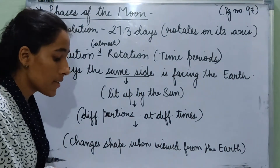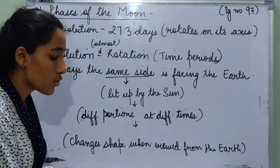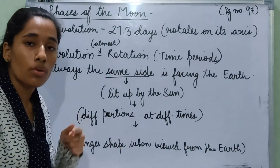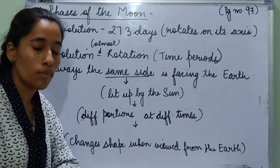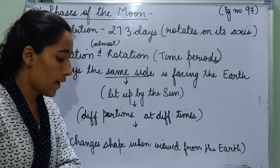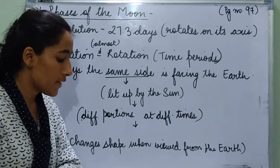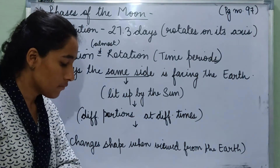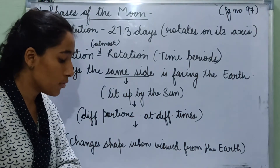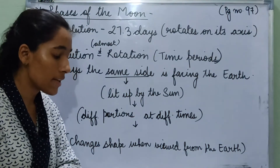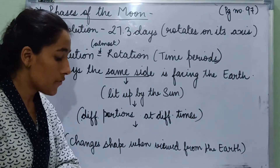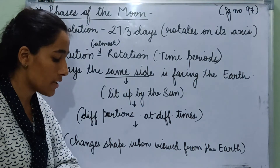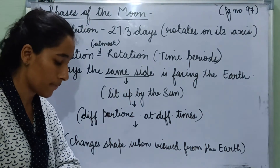Thus, the same side of the moon is always facing the earth. This is why we always only see just one side of the moon. The part of the moon that faces the sun is lit up by the sun. Different positions of the moon are illuminated by the sun at different times during its rotation.